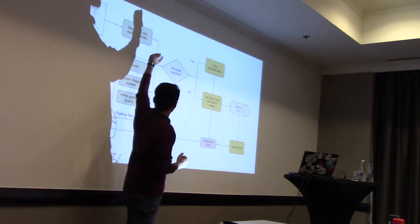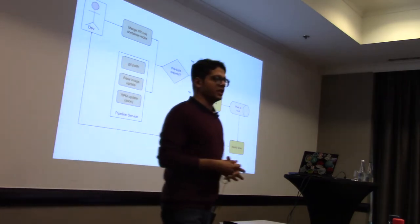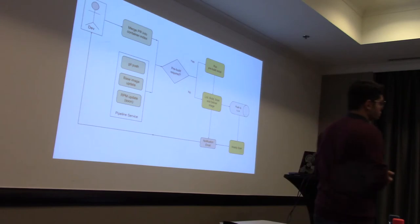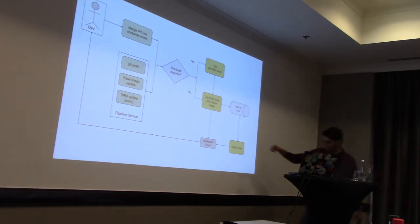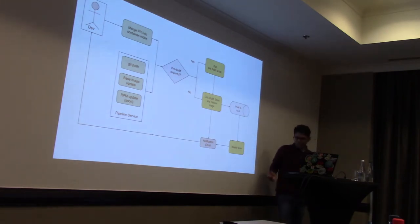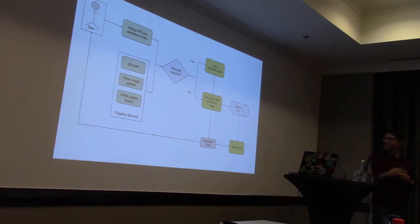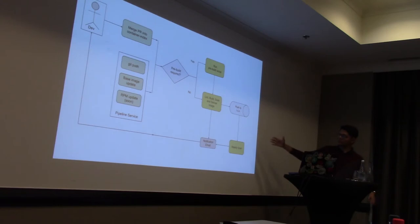Once the pull request gets merged into the GitHub repo, we check if pre-build is required. If it is, we execute the script that builds the binaries or artifacts requested. Once that is done, we go to the meat of the service: linting, building, scanning, and delivering the image. If you don't require pre-build, we skip directly to that step. Once done, we push the container image to registry.centos.org and side by side send an email notification to the developer. We also do a weekly scan referencing registry.centos.org.